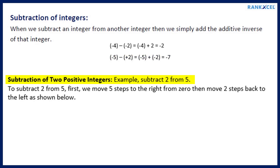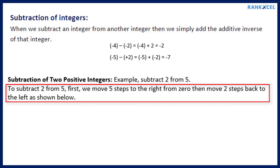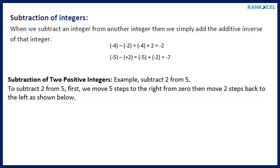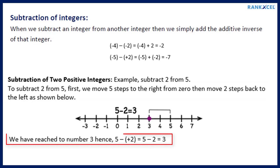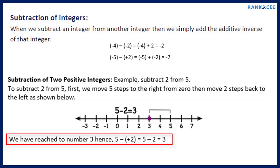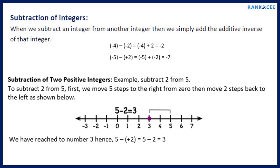Subtraction of 2 positive integers on a number line. Example: Subtract 2 from 5. To subtract 2 from 5, first we move 5 steps to the right from 0, then move 2 steps back to the left. We have reached number 3. Hence 5 minus plus 2 equals 5 minus 2 equals 3.